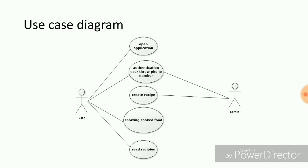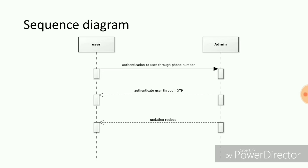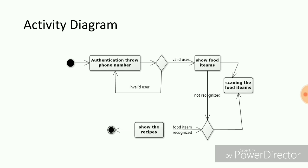This is the use case diagram. First, the user opens the application. Authentication is done using Firebase — the user provides a phone number, receives a one-time password (OTP), and logs in. The admin uses the system mainly for creating recipes and feeding them to the app. It will show cooked food to the user, who can then read the recipes. The frequency diagram shows that both user and admin authenticate through phone number and OTP, and the admin can update recipes.